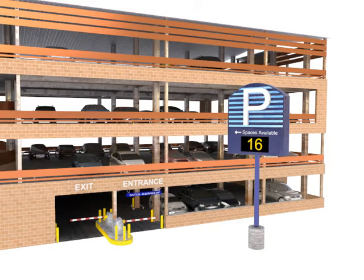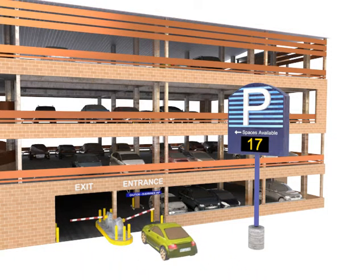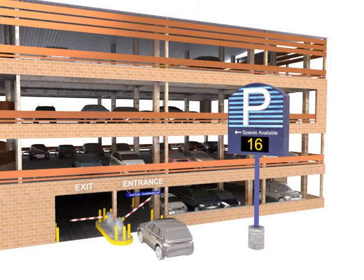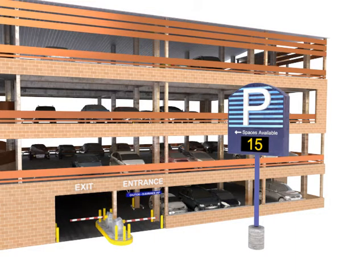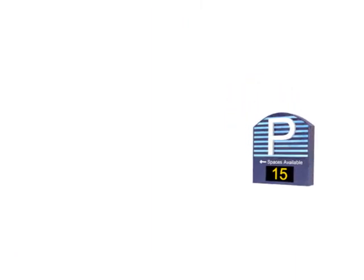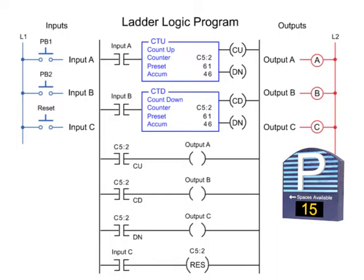Pairing a CTU and CTD in a counting sequence, using the same counter file, is demonstrated in a Parking Garage application. As vehicles enter the Parking Garage, PB1 is pressed to open the gate. The CTU instruction increments by one, and the visual display is updated.